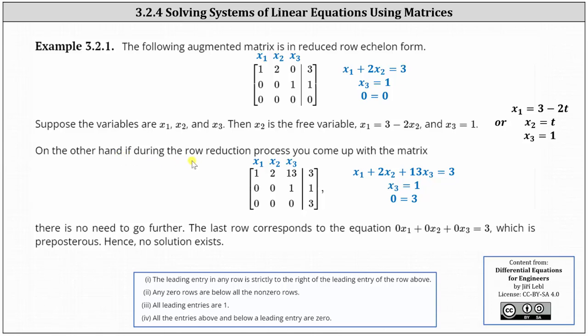On the other hand, if during the row reduction process we come up with an augmented matrix where focusing on the third row we have 0, 0, 0, 3 — this indicates 0 equals 3, which we know is never true. This indicates the system has no solution, so we can stop here. The first two rows become irrelevant. I hope you found this helpful.